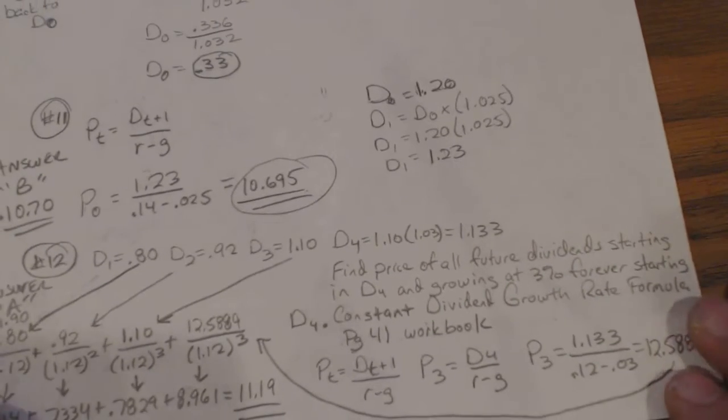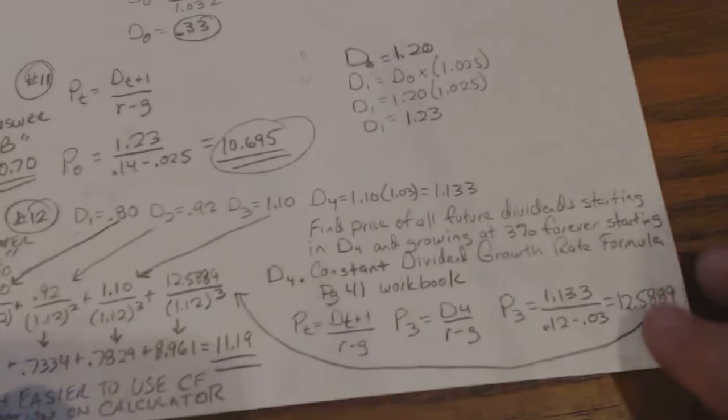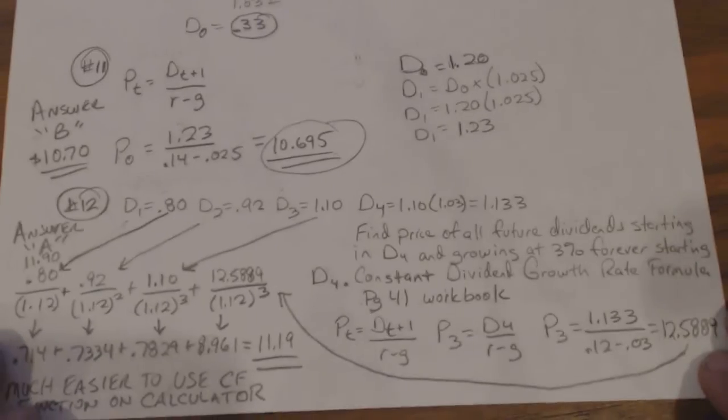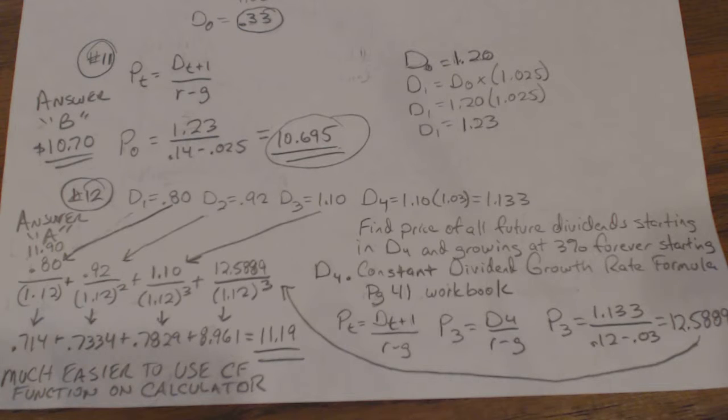And then problem number 12 is one with the cash flows. Basically Yorktown Pharmacy recently announced that it will pay annual dividends of 80 cents, 92 cents, and a buck 10 over the next three years, and after that the dividends will increase by 3 percent annually.